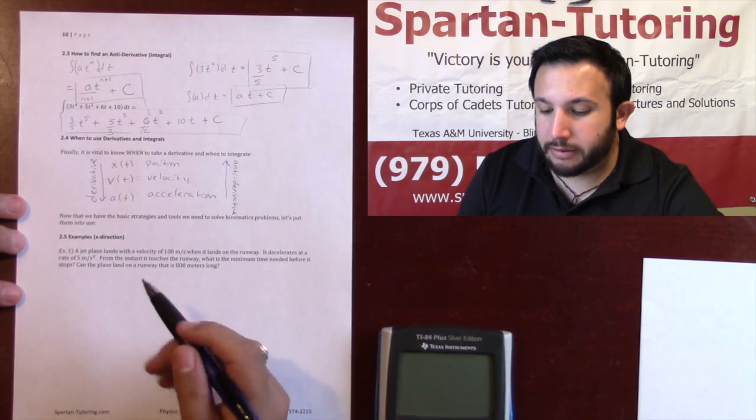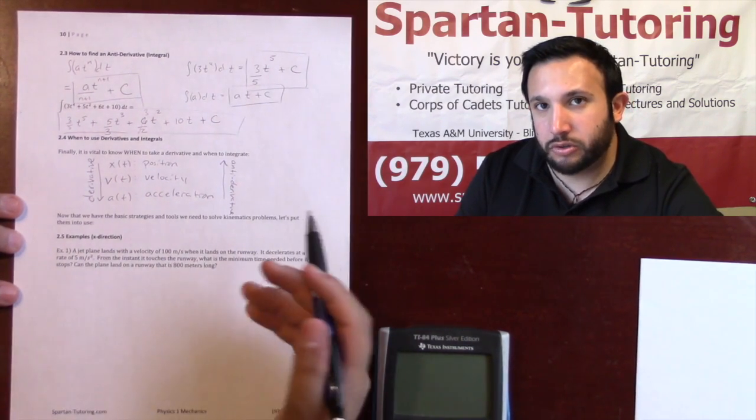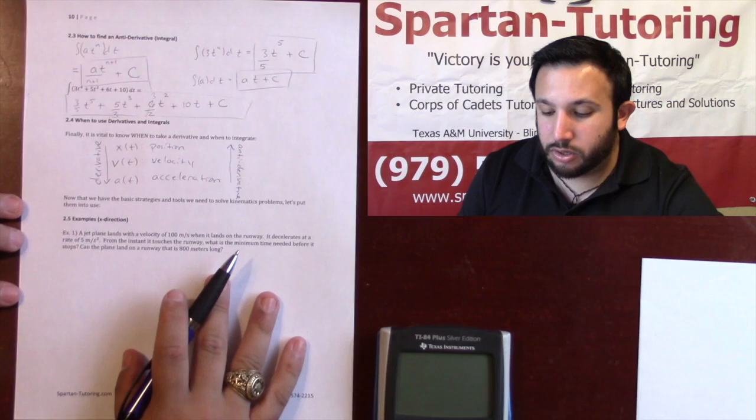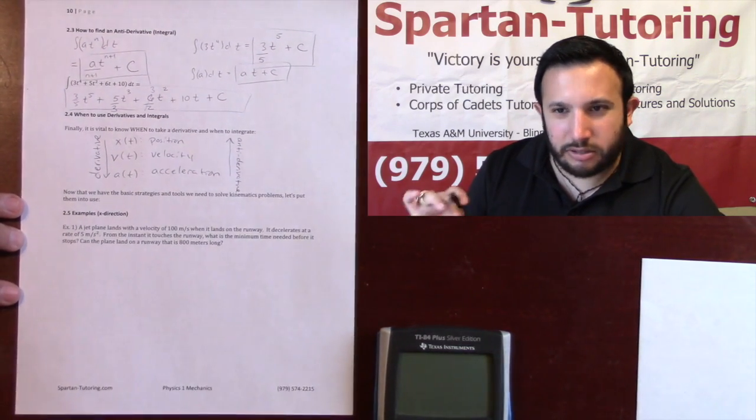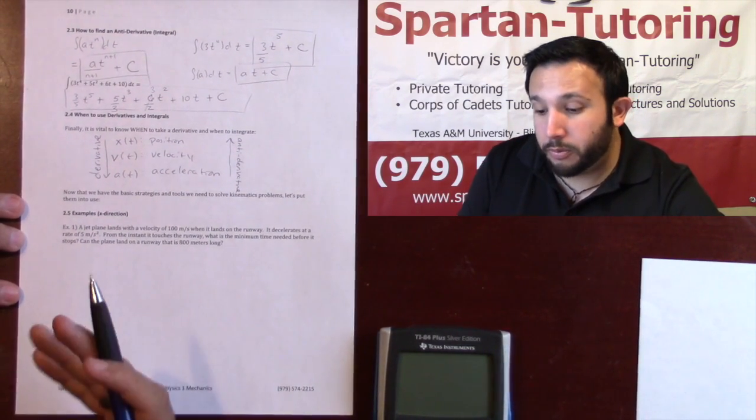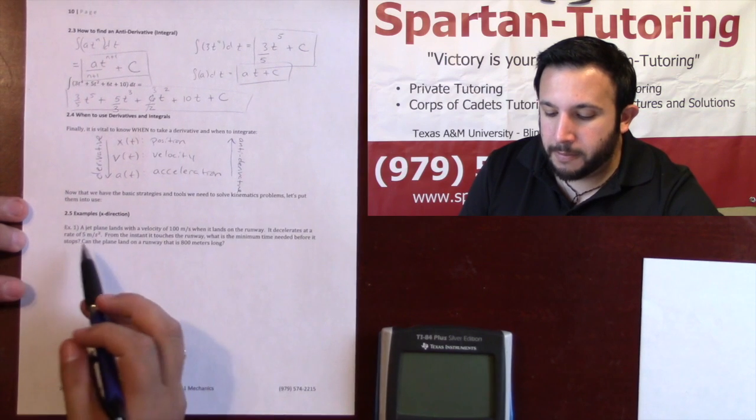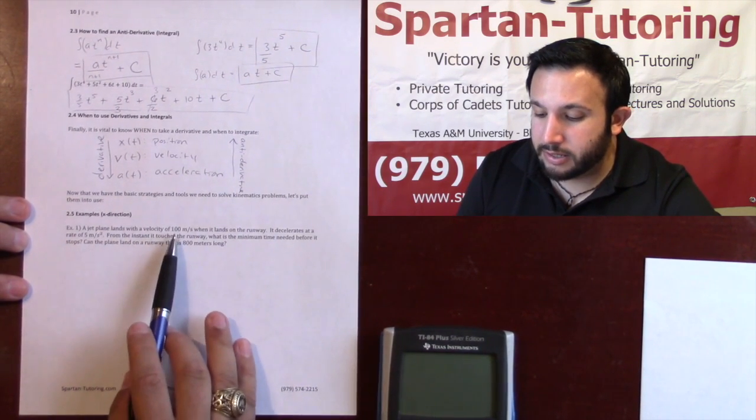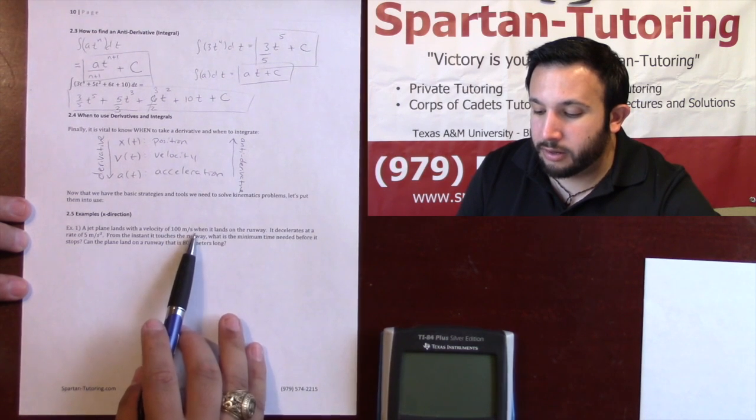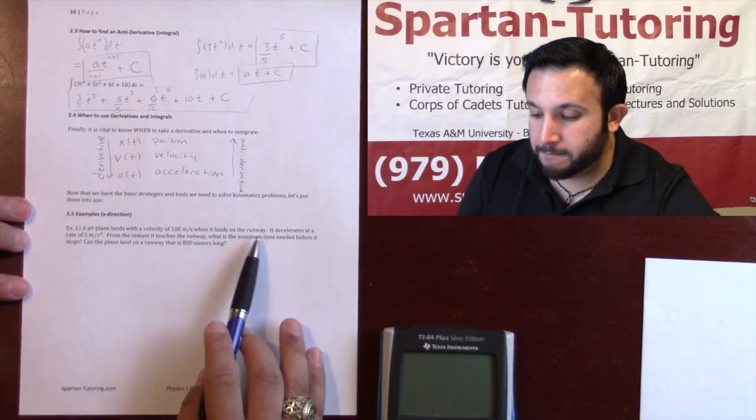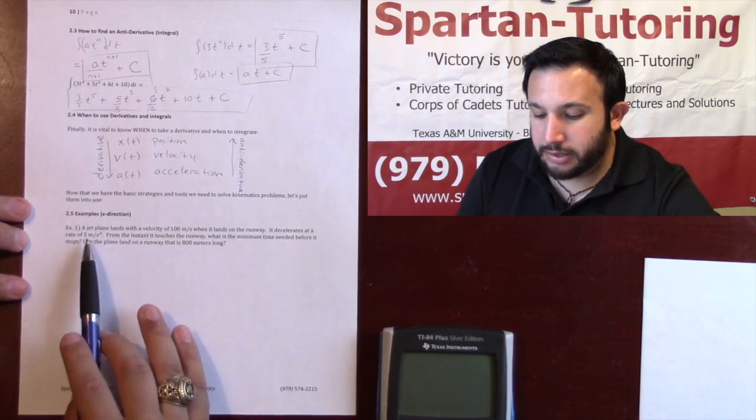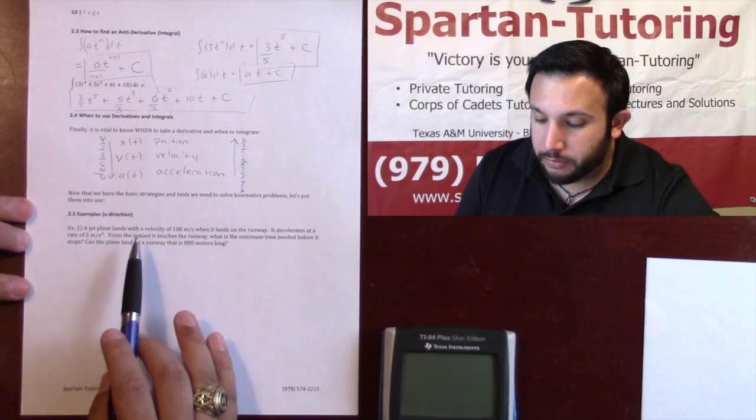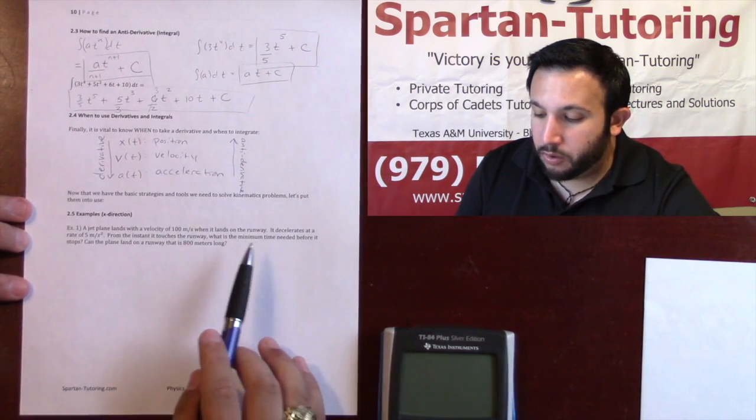Previously we talked about the introduction and how kinematics is going to work, but now let's start knocking out problems and utilize what we just learned. For number one, a jet plane lands with a velocity of 100 meters per second. When it lands on the runway it decelerates at a rate of 5 meters per second squared from the instant it touches the runway.